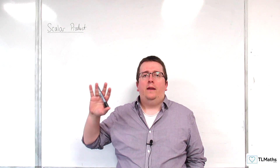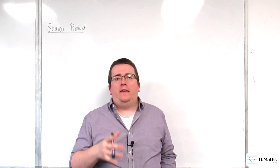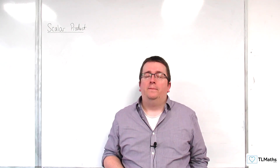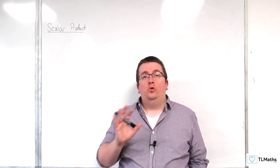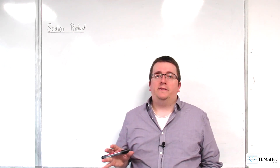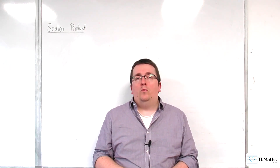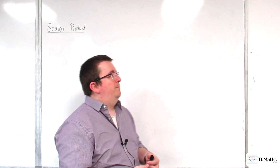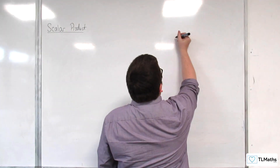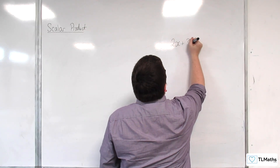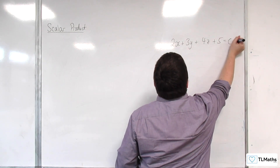Way back in the playlist, when I introduced the Cartesian equation for a plane, we looked at situations where two or three planes were intersecting — whether they intersected at a point, on a line, whether it was a sheath or a triangular prism. The Cartesian equation of the plane might look something like this: 2x + 3y + 4z + 5 = 0, for example.